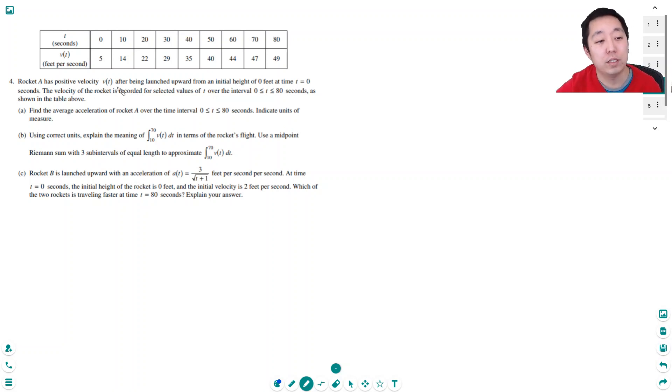Rocket A has a positive velocity v of t after being launched upward from an initial height of 0 at time t equals 0. The velocity of the rocket is recorded for selected values of t over the interval 0 to 80 seconds as shown in the table above. Find the average acceleration of rocket A over the time interval 0 to 80 seconds. Indicate units of measure.